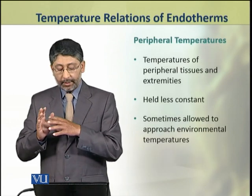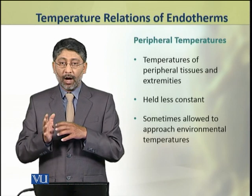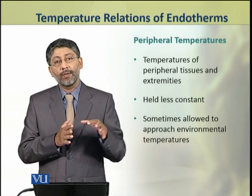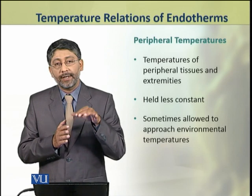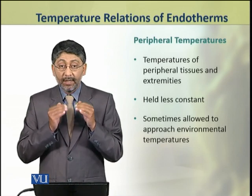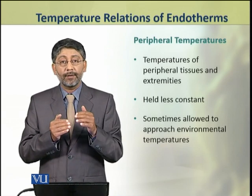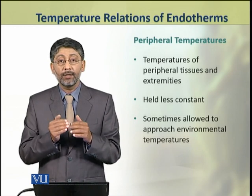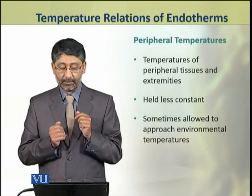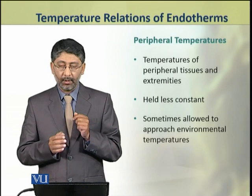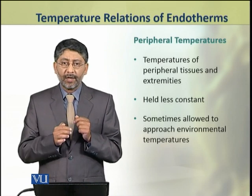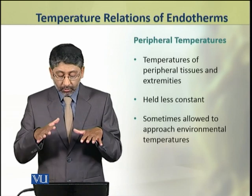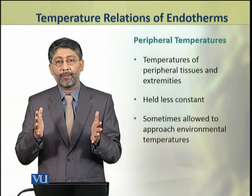The temperatures of peripheral tissues and extremities are known as peripheral temperatures. These temperatures are held comparatively less constant in homeothermic endotherms, and are sometimes even allowed to approach the environmental temperatures.